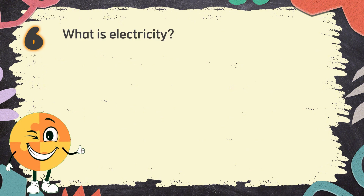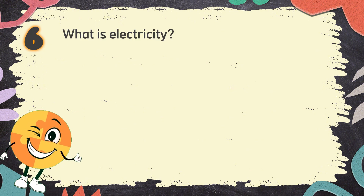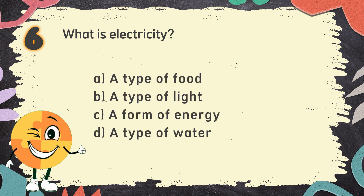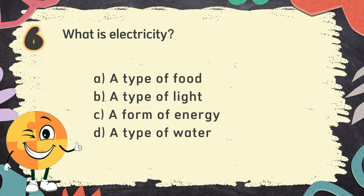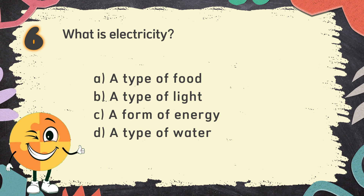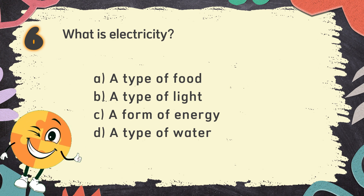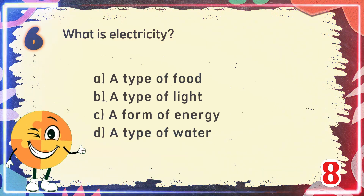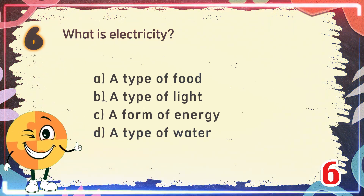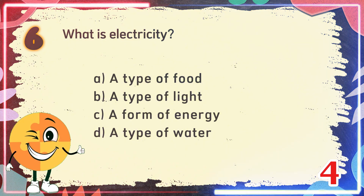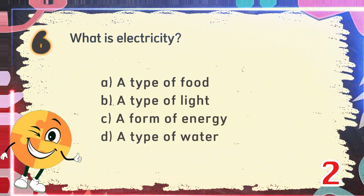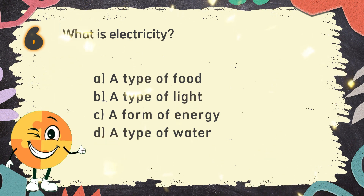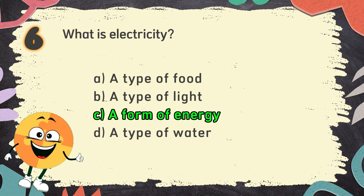Number 6. What is electricity? The choices are: A. A type of food, B. A type of light, C. A form of energy, D. A type of water. The correct answer is C. A form of energy.